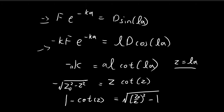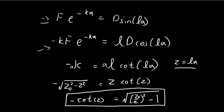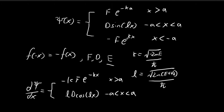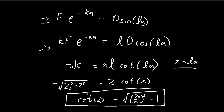If we can find the value of z for which this equation is satisfied, we can deduce what l is, which allows us to find the allowed energy levels E. This is a transcendental equation, so there's no closed-form solution — we need to graph the functions to find the solutions.